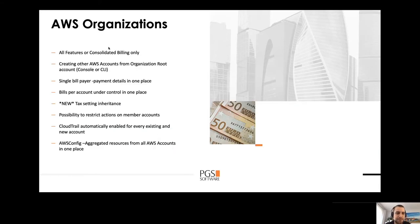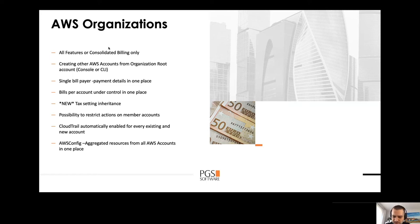AWS Organizations allows you to keep your billing in one place. You can have a single payer account and see how much all your accounts are spending each month. You can also restrict actions on your member accounts and be sure that everything is being logged to your CloudTrail logs, because you cannot disable logs on member accounts that were enabled on your master account.